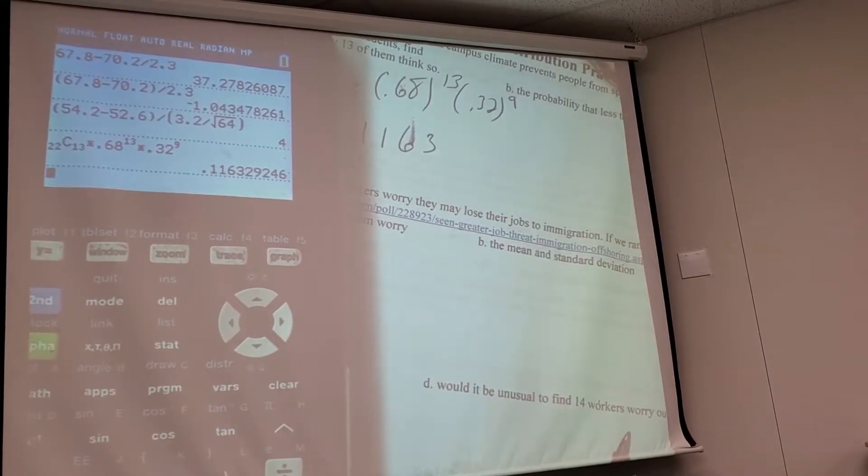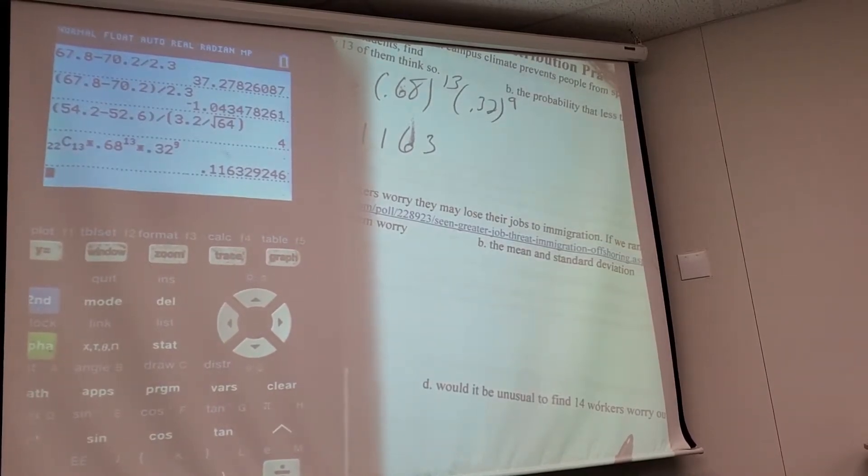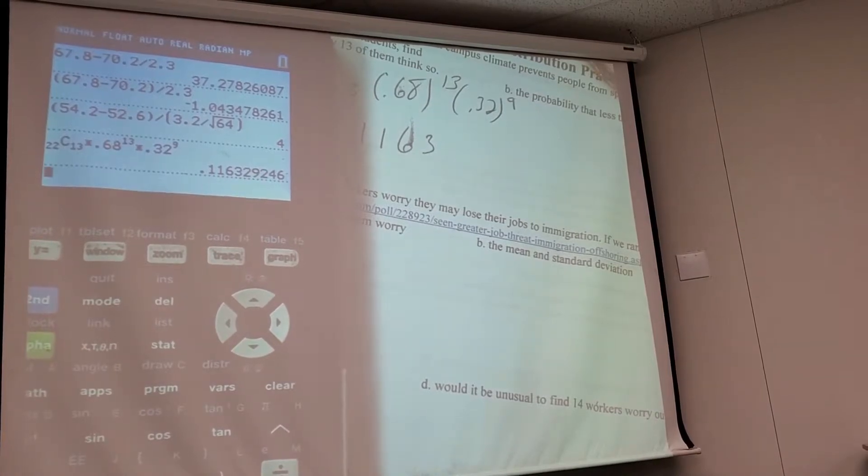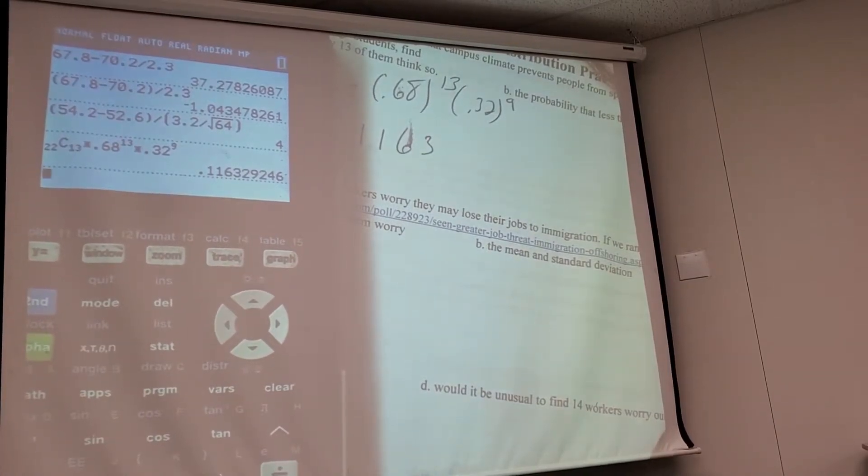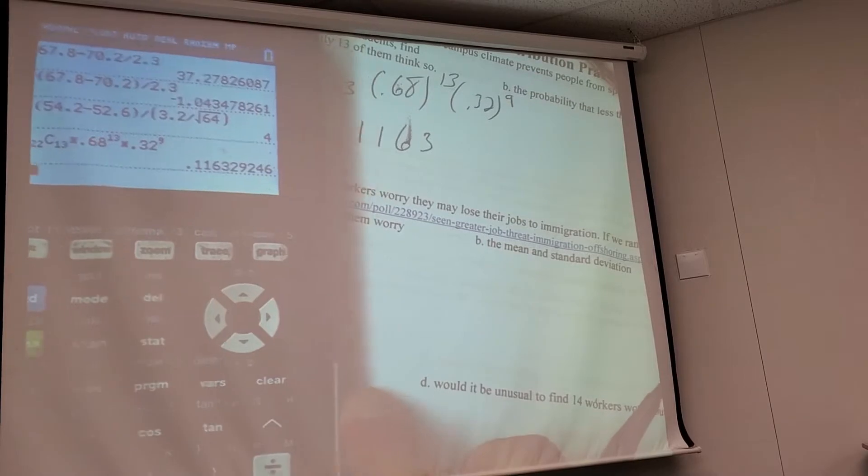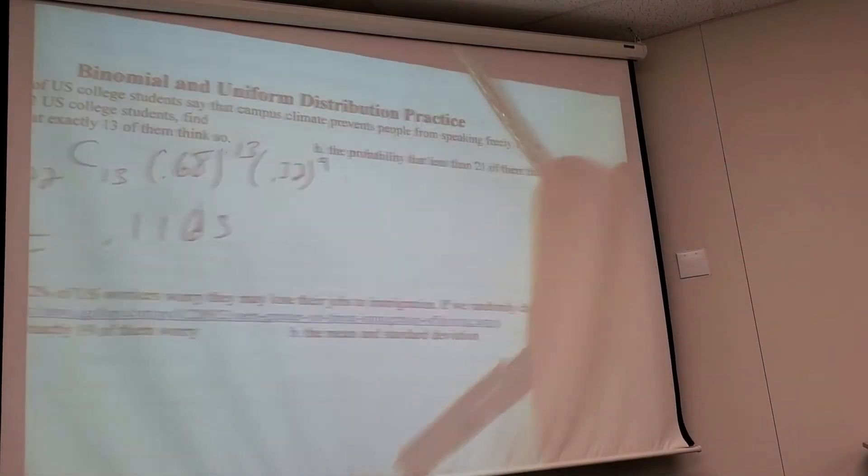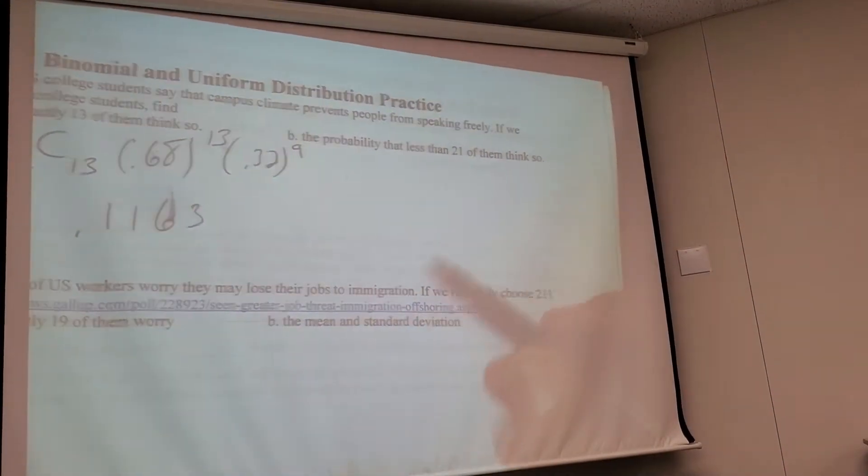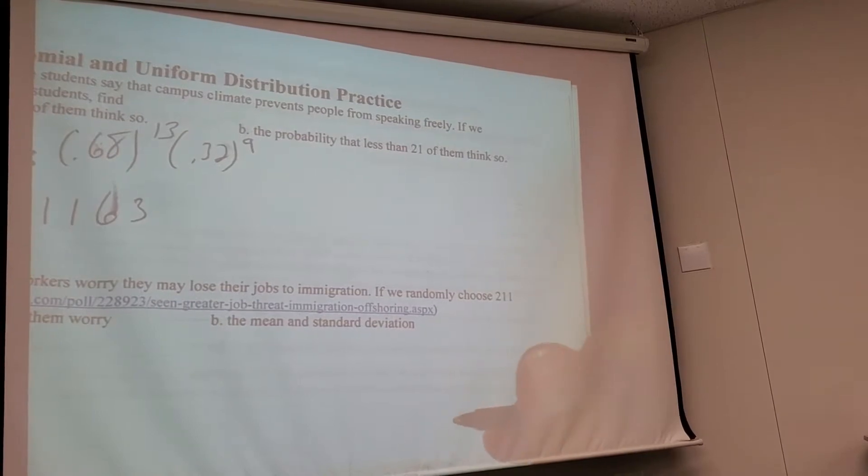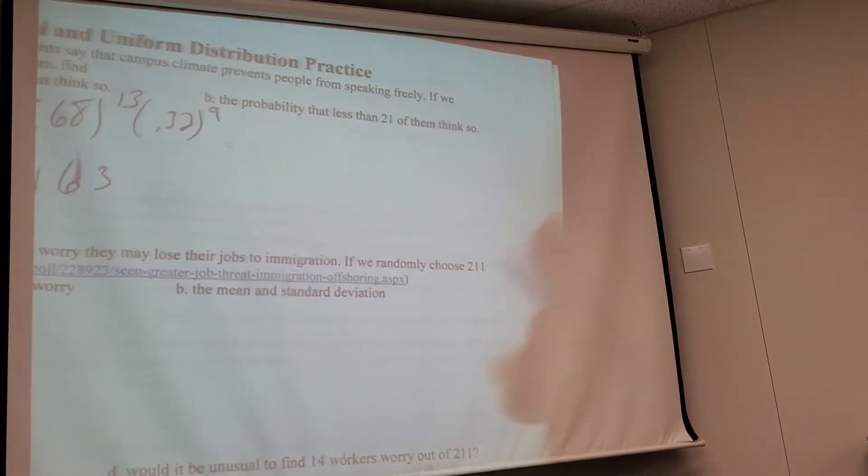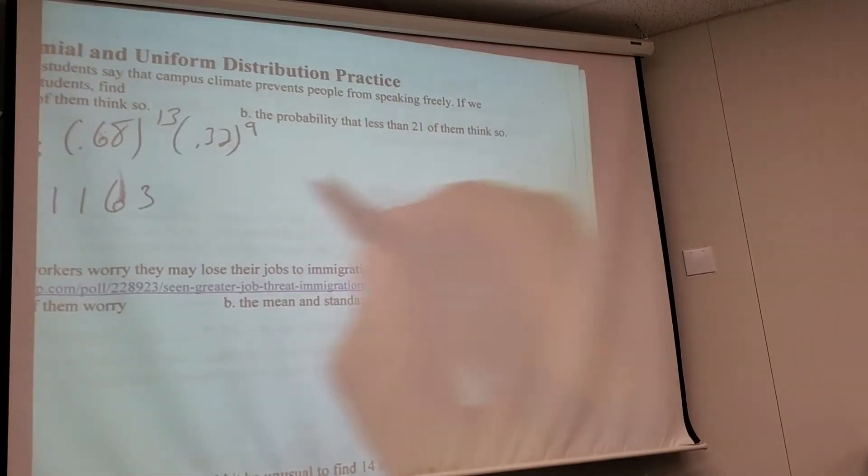If you have an older calculator, it's 22 NCR 13 all on one line. You just keep going. Times 0.68, here's your to the button, to the 13. And there's another situation. I got to hit over to come down. Times 0.32 to the ninth. And I'm done putting stuff in, so I can just hit enter. Are you guys all right? You guys aren't okay, I know this already. But you guys understand that problem? We need a fall break. I know, but we don't have it.